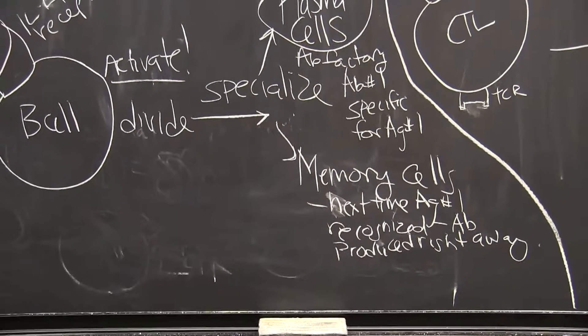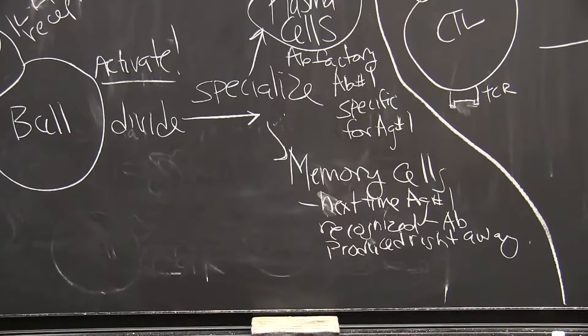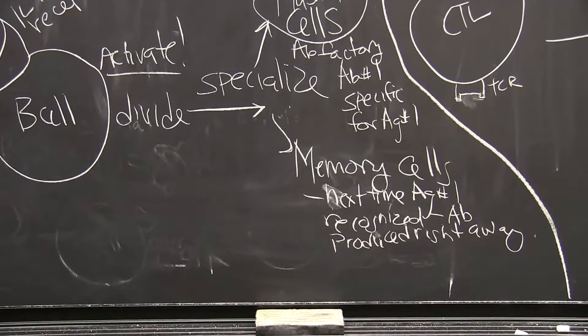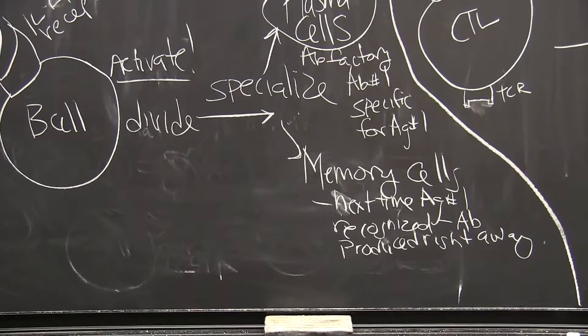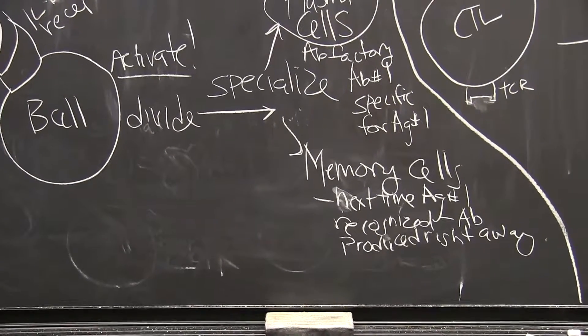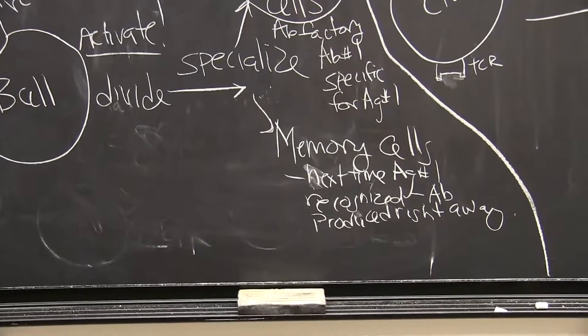That's the great thing about the memory response. We can have memory T cells and memory B cells. When you see the same antigen a second, third, fourth, a hundredth time, your memory B cells will be activated right away, and you'll have destruction of your specific pathogen very quickly.